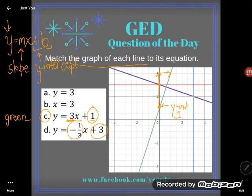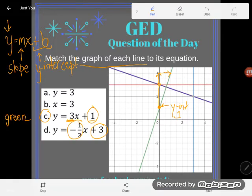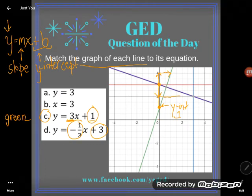And then it has a slope of negative 1 third. It goes down 1 and over 1, 2, 3. And look at me ending up on that purple line. D is definitely the purple line.